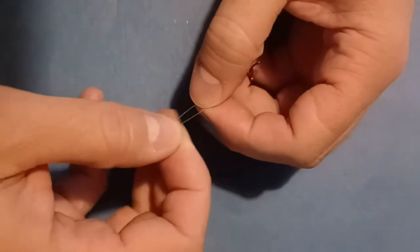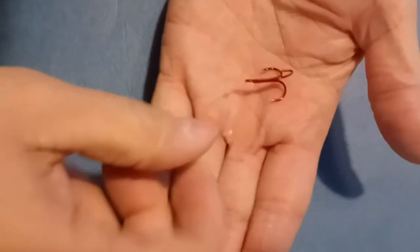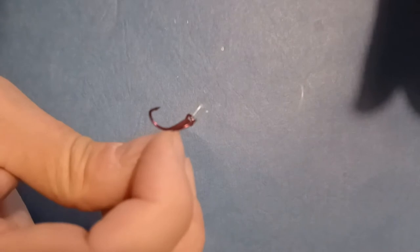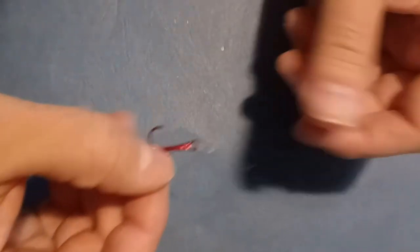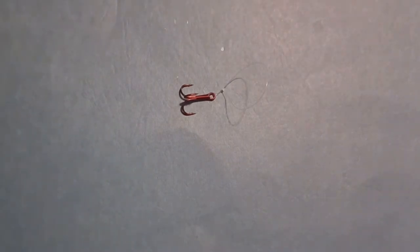So there you have a homemade stinger hook with no hardware, just a treble hook and some line. And so it's that large loop there, as I had mentioned, that you're going to wrap around the hook of the jig.